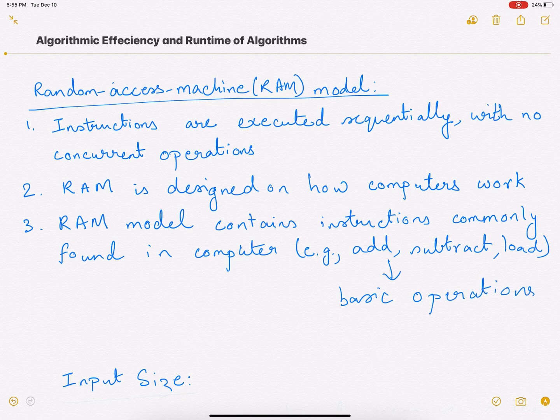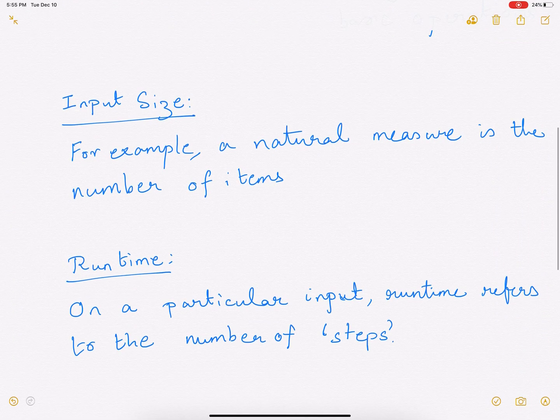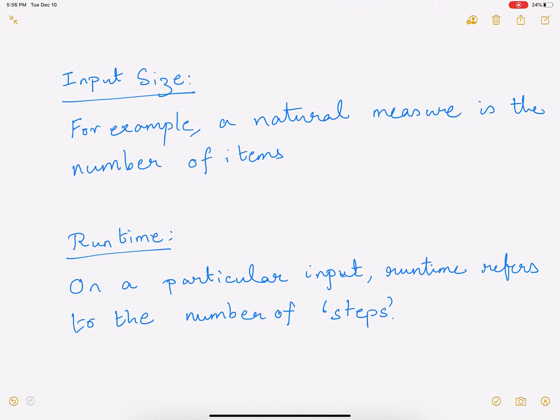The next thing we need to understand while determining algorithmic efficiency is the input size. Depending on the problem, the input size will be different. For example, if you have a bunch of numbers that you need to sort, the natural measure for the input size is the number of items or numbers that you have.